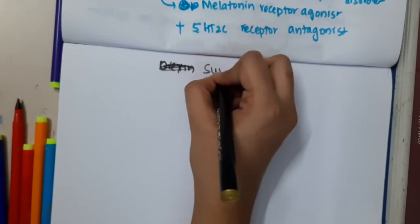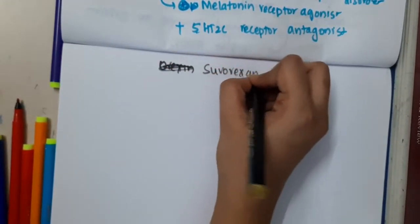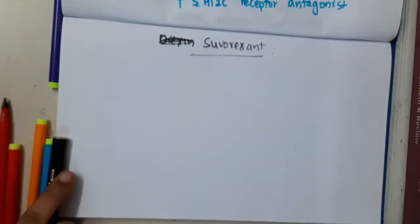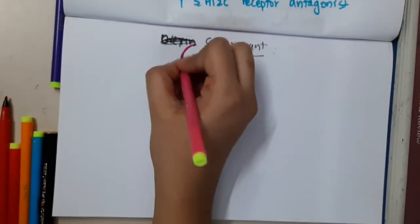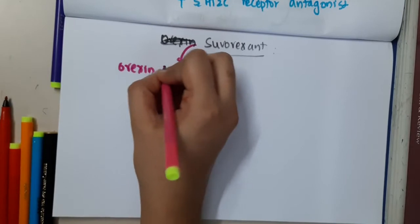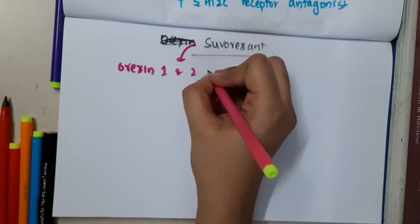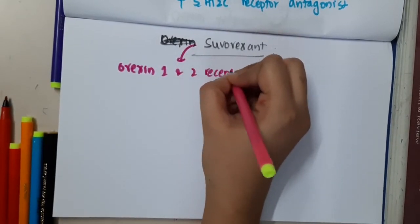This is Suvorexant. Let us now learn some important points about Suvorexant. What is this Suvorexant? It is an O-rexin 1 and 2 receptor inhibitor.